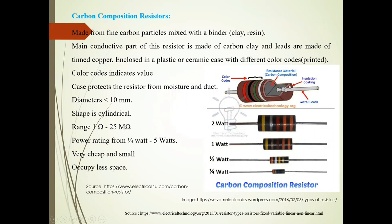There is an insulation coating and metal leads. The resistor is enclosed in a plastic or ceramic case with different color codes. These color codes indicate the value of the resistor, and the case protects the resistor from moisture and dust.